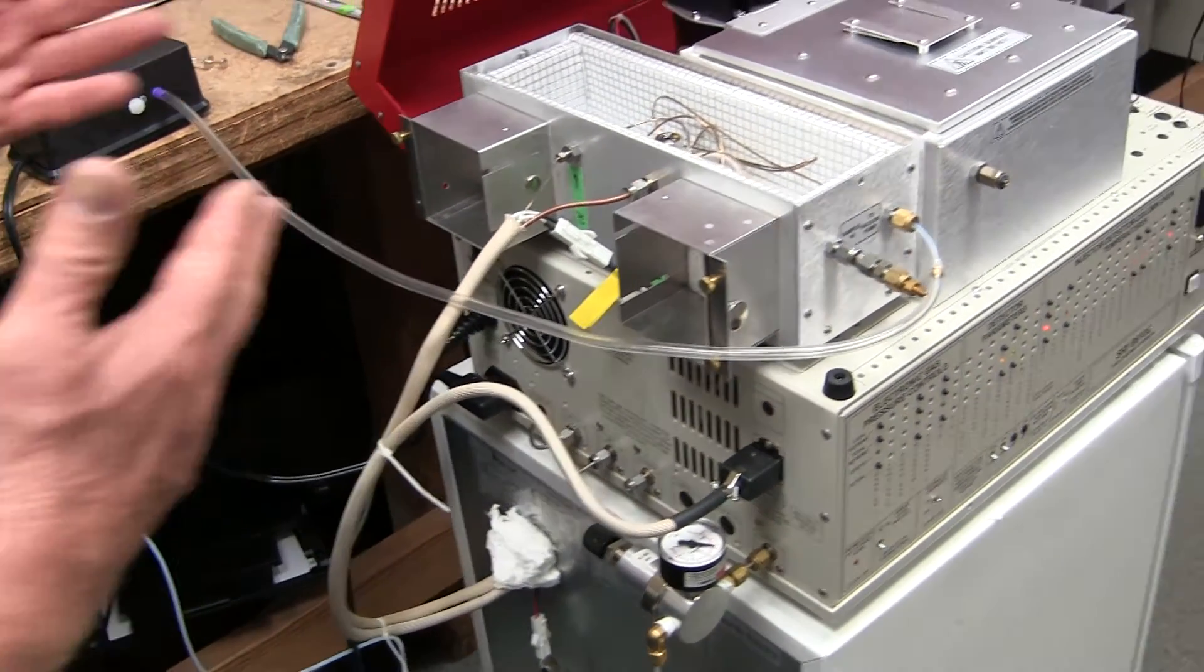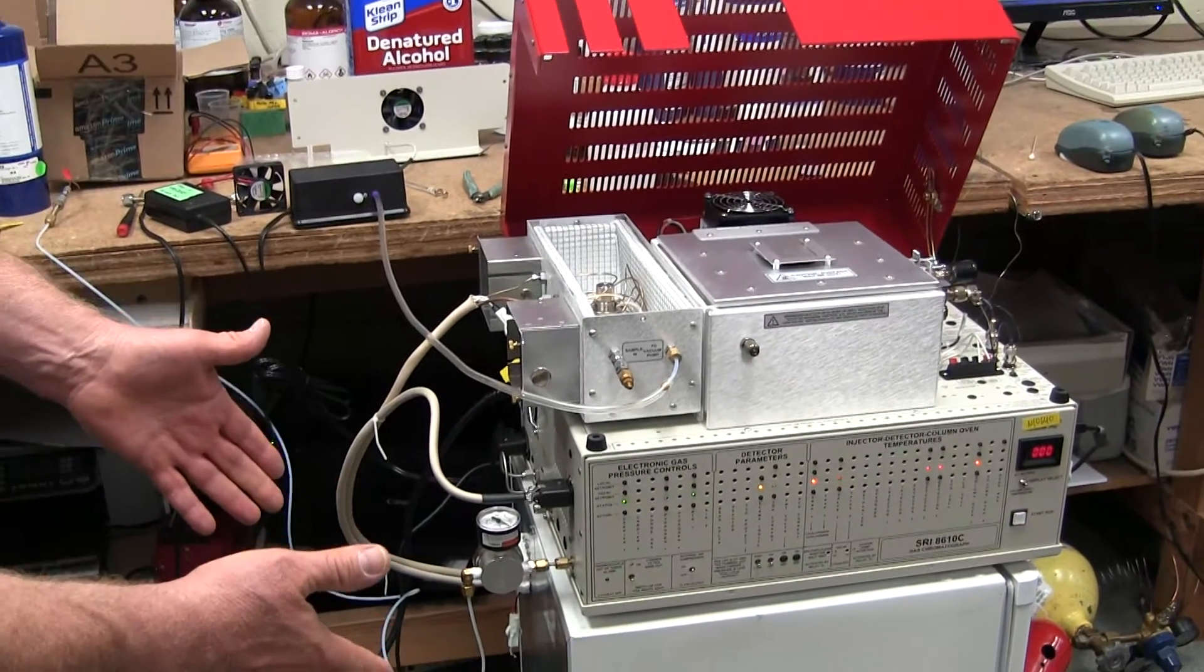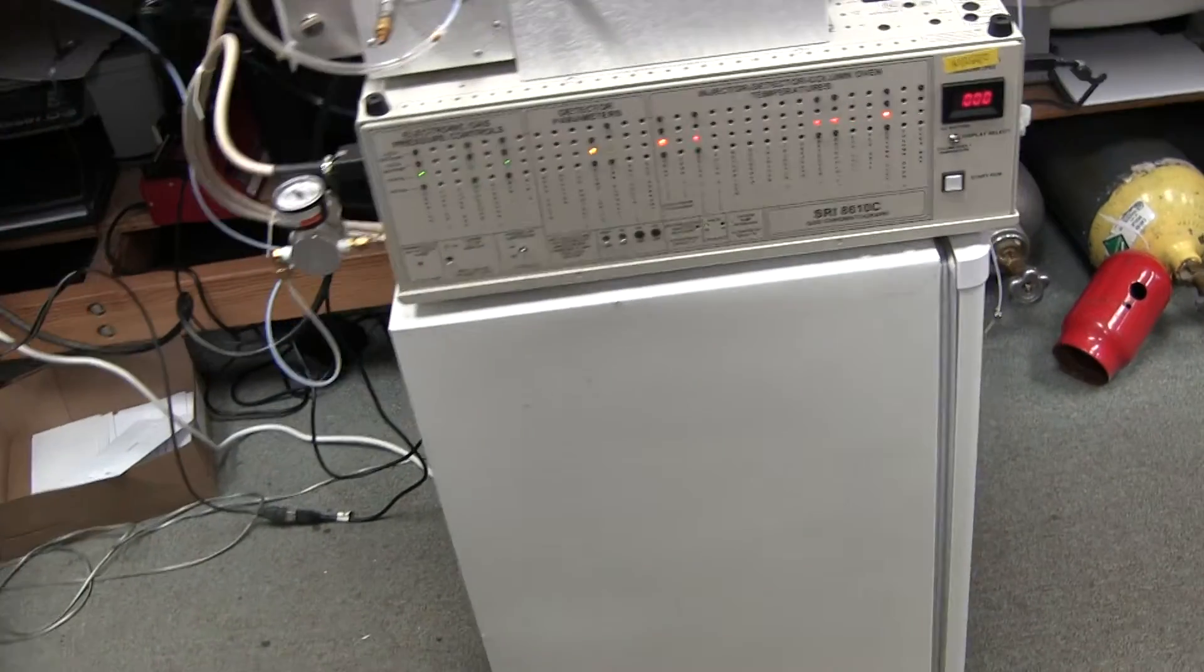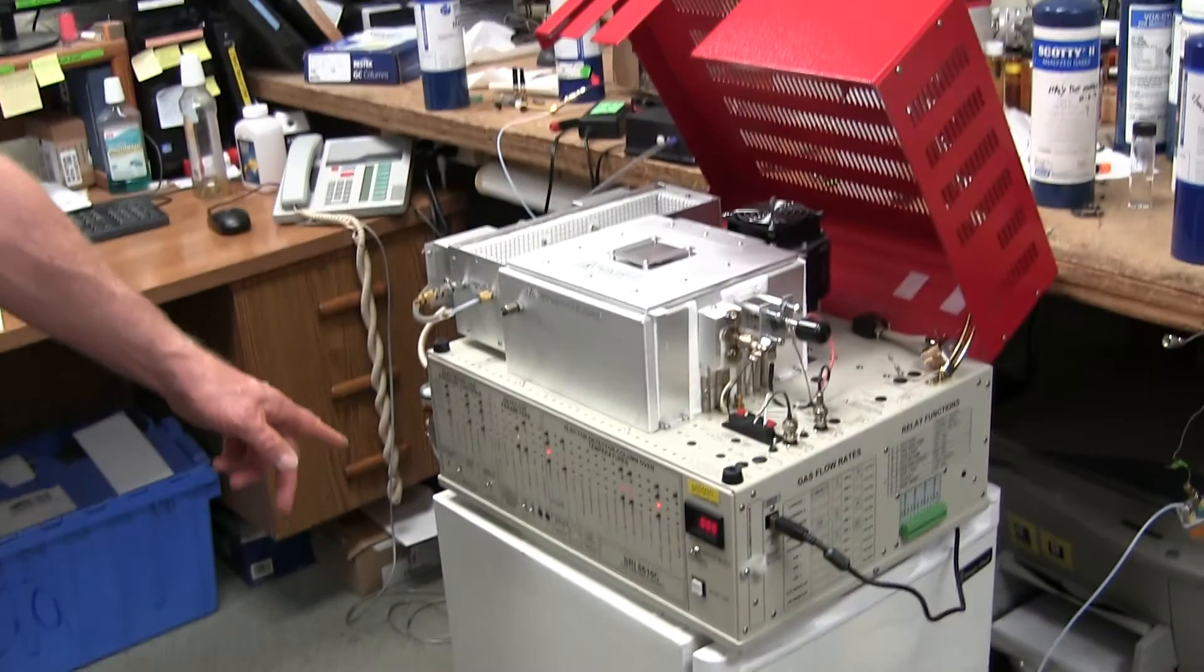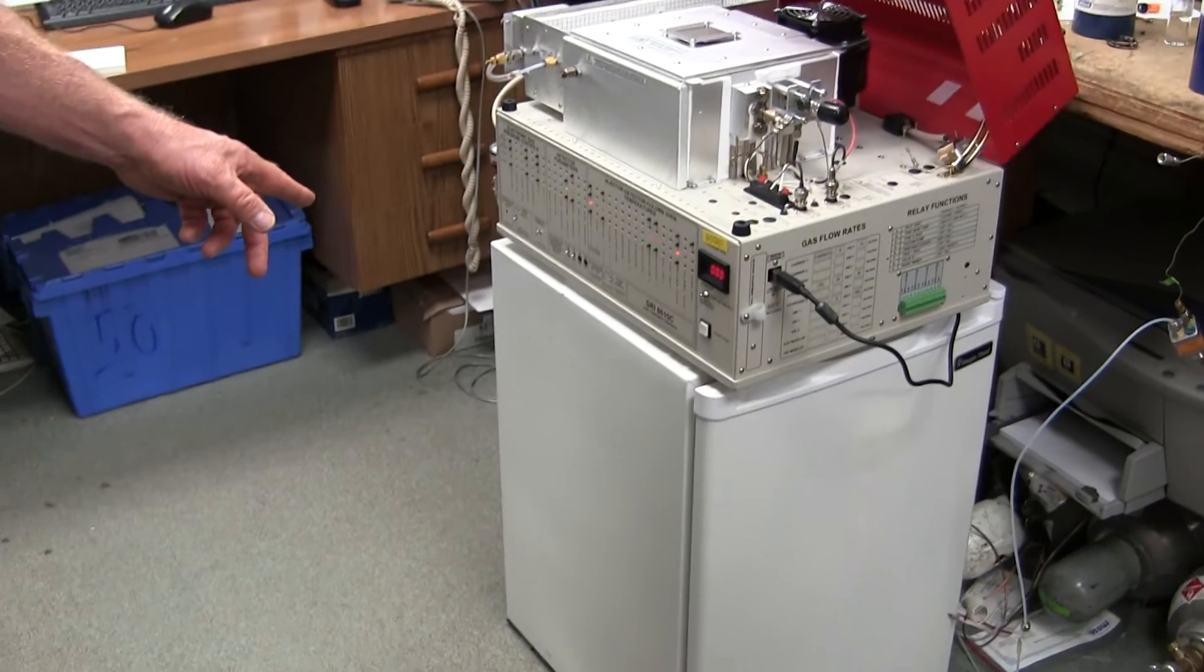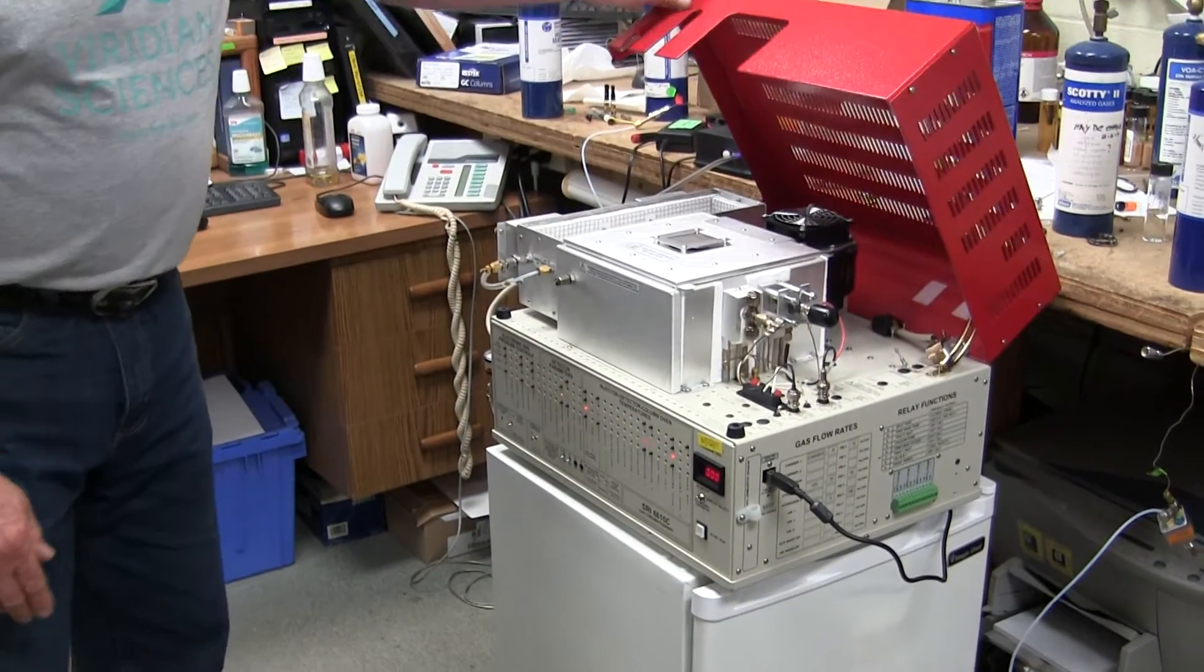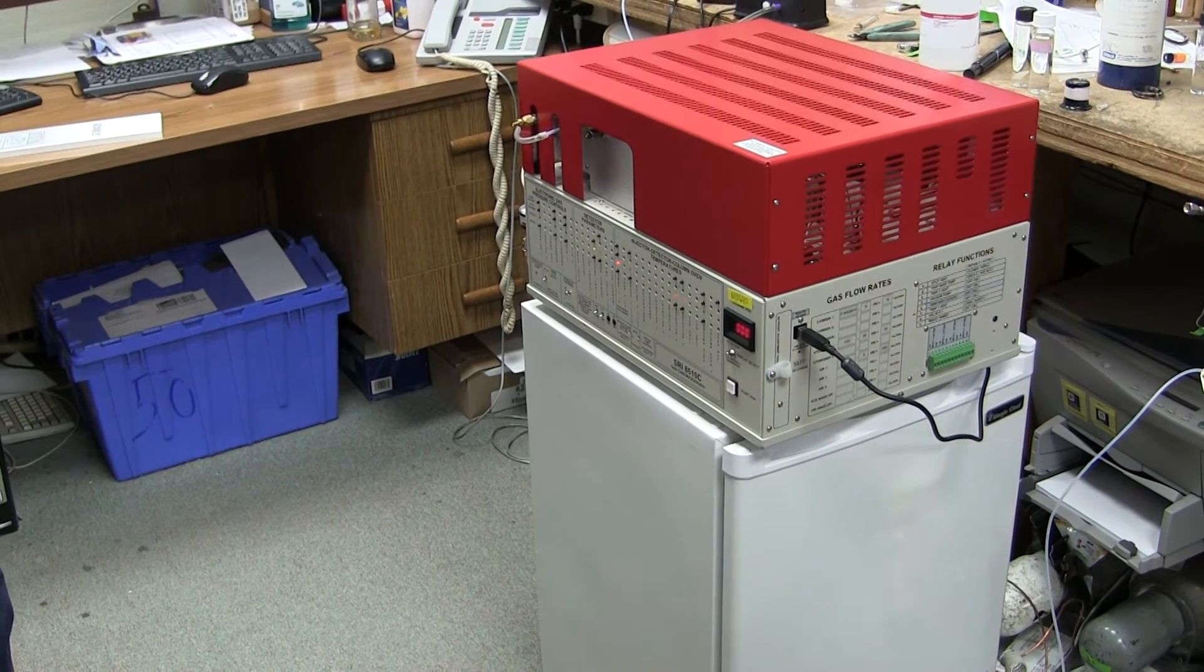That's the overview of the cryogenic pre-concentrator using a $100 refrigerator from any kind of a hardware store or Home Depot that should be available all over the world. And by using the $100 refrigerator instead of a $50,000 Peltier cooler, this saves a lot of money and incidentally provides a nice little pedestal to sit the GC on.